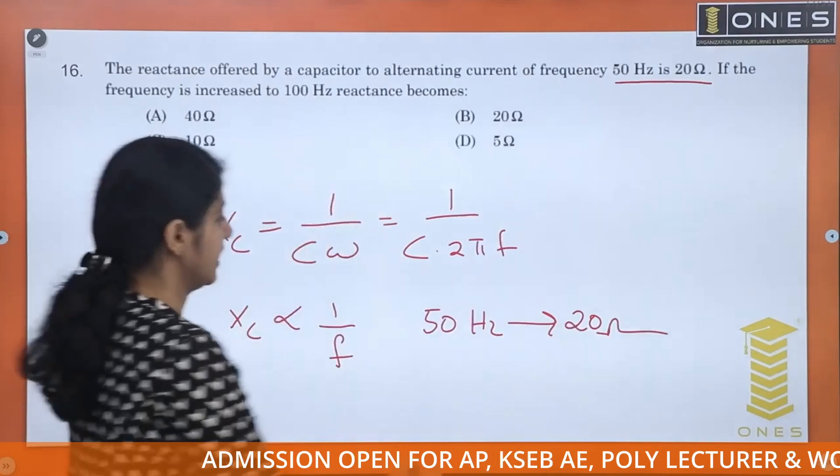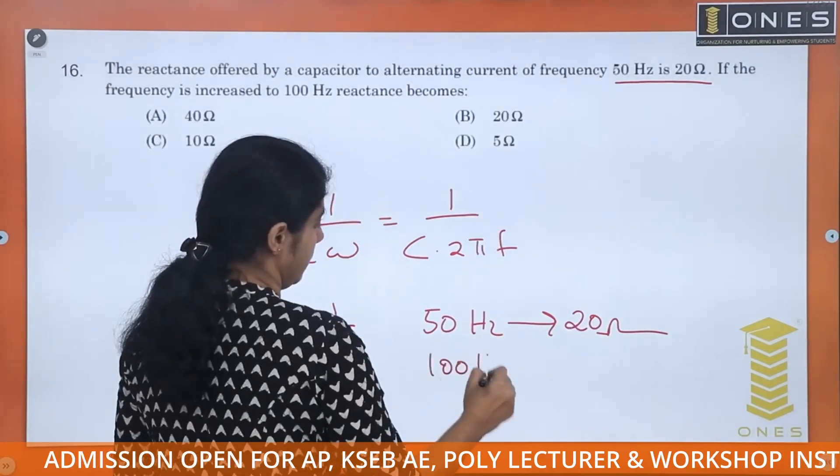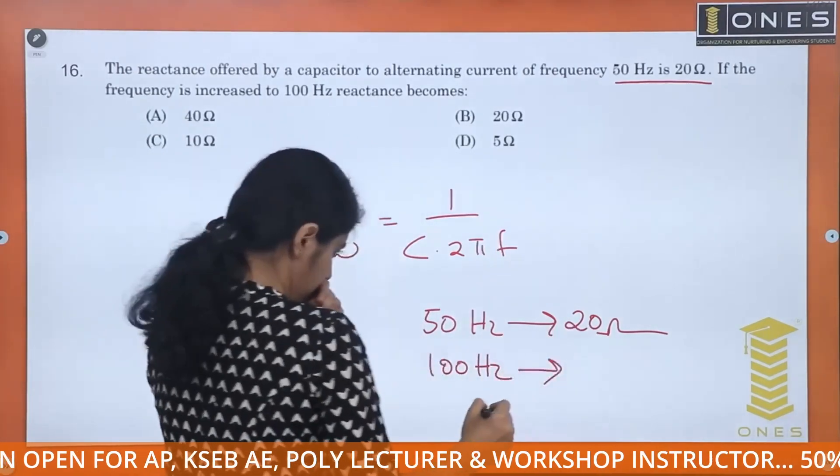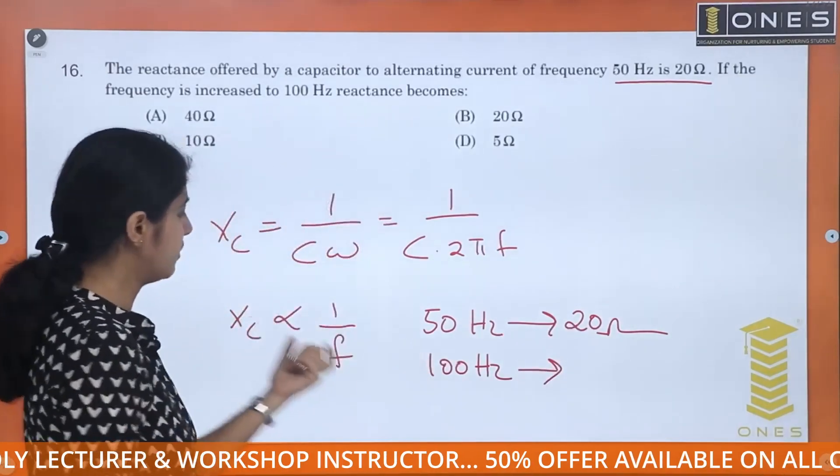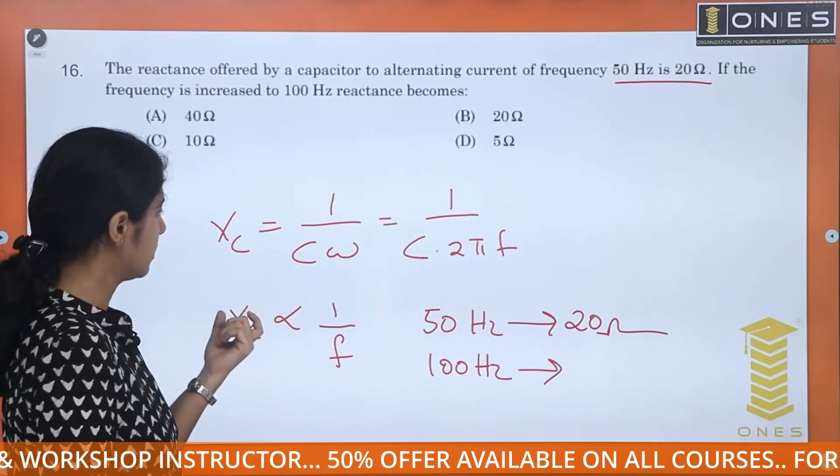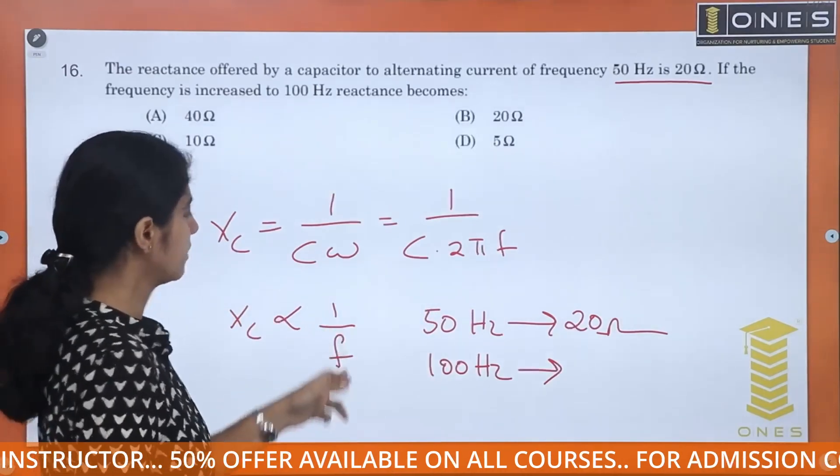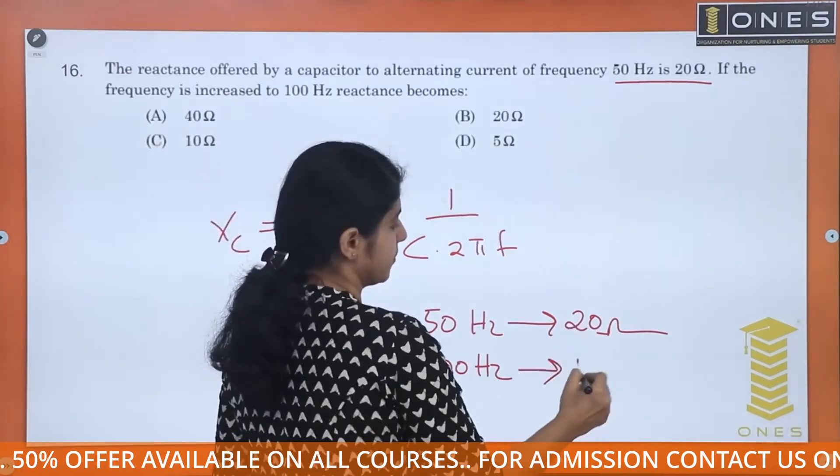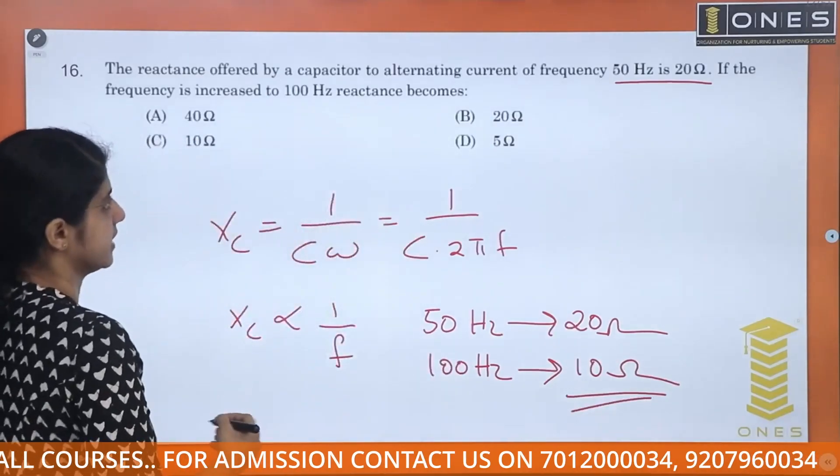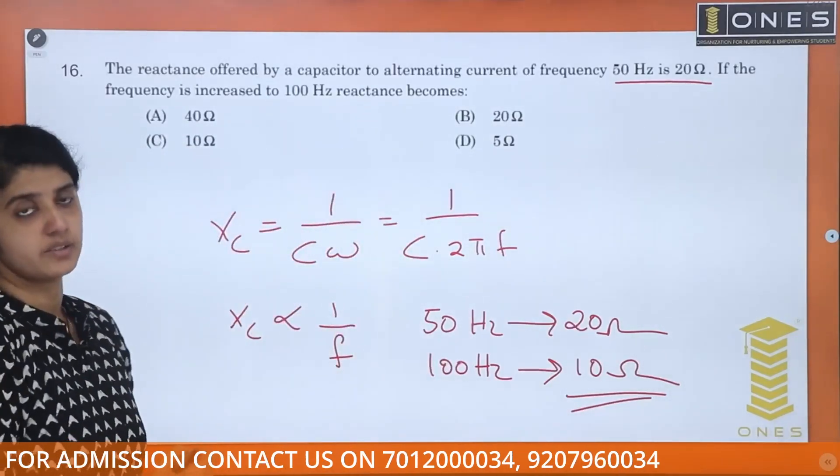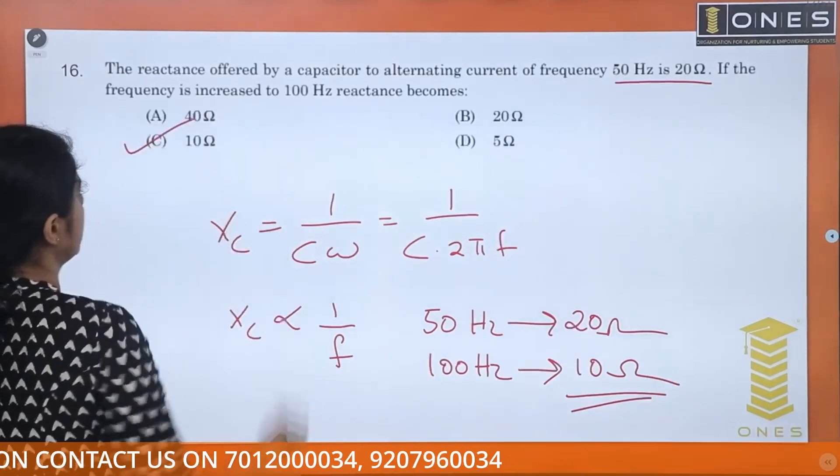What about 100 Hz? It is inversely proportional. When the frequency doubles, Xc becomes half. That is 10 ohm. The answer is 10 ohm.